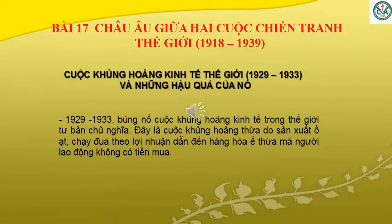Bài 17: Châu Âu giữa hai cuộc chiến tranh thế giới 1918-1939. Trong bài này, các em sẽ học phần cuộc khủng hoảng kinh tế thế giới năm 1929-1933 và những hậu quả của nó. Về cuộc khủng hoảng kinh tế: năm 1929-1933 bùng nổ cuộc khủng hoảng kinh tế trong thế giới tư bản chủ nghĩa. Đây là cuộc khủng hoảng thừa do sản xuất ồ ạt, chạy đua theo lợi nhuận, dẫn đến hàng hóa ế thừa mà người lao động không có tiền mua.